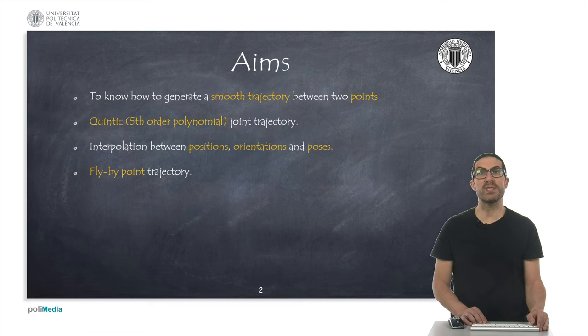Then we will see how to apply these ideas to interpolate between two positions, between two orientations and also between two poses, that is, the combination of position and orientation. Finally, we will see how to compute a trajectory passing near a flyby point without stopping.